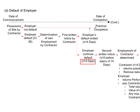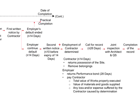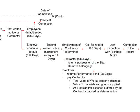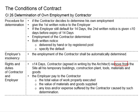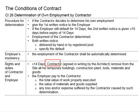If the employer still remains in default, the duration given is 14 days. Within these 14 days, if the employer still remains in default, the determination can happen. Before that, there should be a second written notice, given within 10 days before the expiry of these 14 days. After the second notice, if the employer still remains in default, the employment of the contractor can be determined. Within 14 days, the contractor will need to return possession of the site to the employer and remove his belongings, with written agreement by the architect — to prevent the contractor from removing items which are supposed to remain on site.